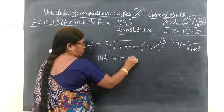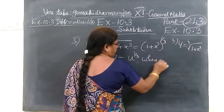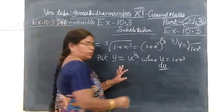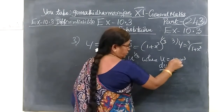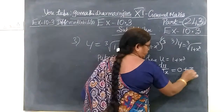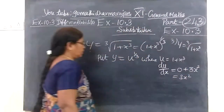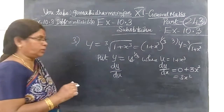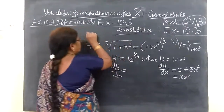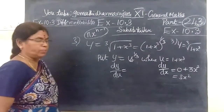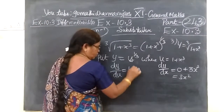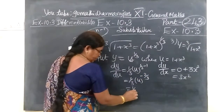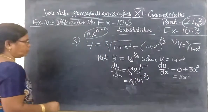We will use substitution method. Put y equal to u power 1 by 3, then let u equal to 1 plus x squared. So du by dx equals 3x squared. Now using the formula n into x power n minus 1: dy by du equals 1 by 3 times u power 1 by 3 minus 1, which is 1 by 3 times u power negative 2 by 3.